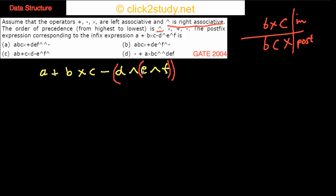Because the exponentiation operator is right associative with highest precedence, we parenthesize right to left. If it were left associative, we'd do it the other way. Next, the multiplication-like operator has the next level of precedence, so we add parentheses around those operands. Then we handle the plus and minus operators, with plus having higher precedence, and all of these being left associative.